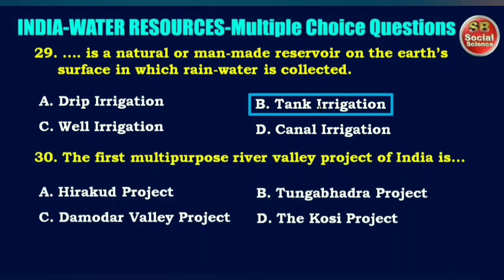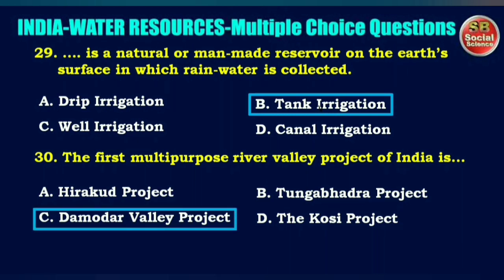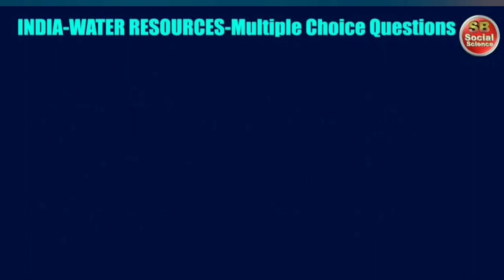The first multi-purpose river valley project of India is — options are Hirakud project, Tungabhadra project, Damodar Valley project, or the Kosi project. The right answer is option C: Damodar Valley project.